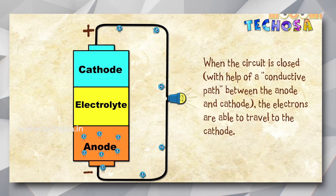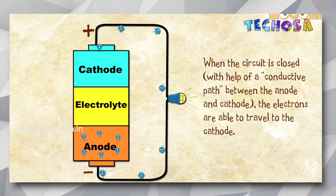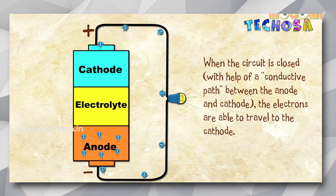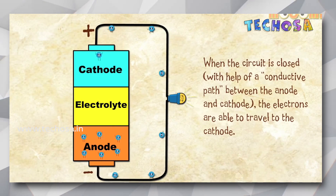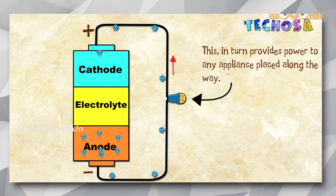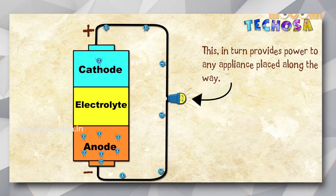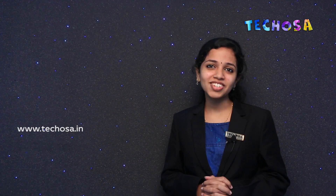The electrons will enter the bulb and it will glow. As time passes, the chemical reaction will change and the anode will no longer have enough electrons to supply to the cathode. So the voltage of the battery reduces. This is when the battery dies. Rechargeable batteries are available that can convert electrical energy back to chemical energy when they are put in charging mode. These batteries can be used again and again. This is how a battery works.